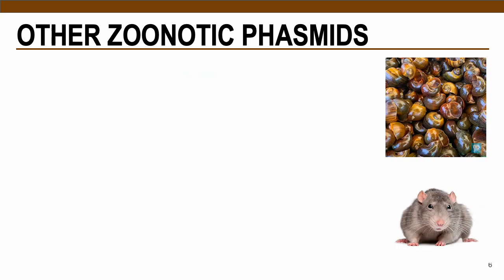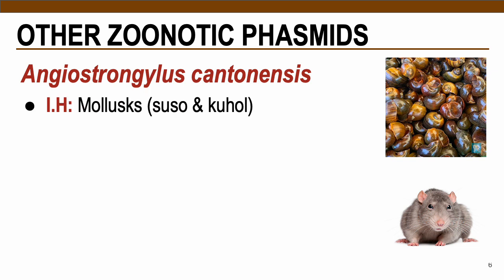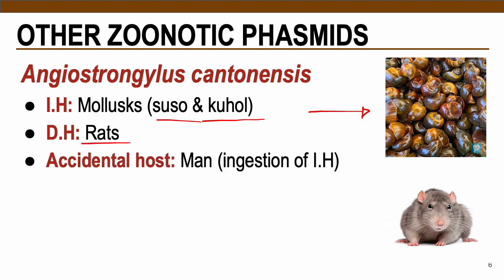In terms of the life cycle, this parasite requires mollusks as their intermediate host — in Filipino, mollusks are suso or kuhol — just like here on this picture. While for the definitive host, they require rats, hence the name rat lungworm. Accidental hosts are humans by ingestion of mollusk, the intermediate host of this parasite.